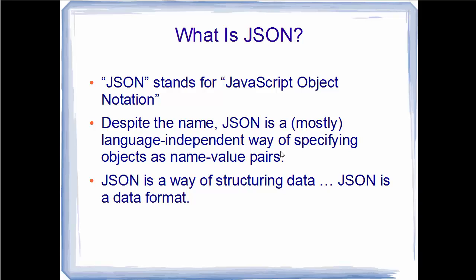JSON can be used in most programming languages. Whether you want to use JSON in C++, Java, JavaScript, Python, or any other language, most probably support for JSON will be present. There will be libraries or parsers available in order to parse or create JSON. So JSON is really language independent and most languages have libraries or parsers to support it.